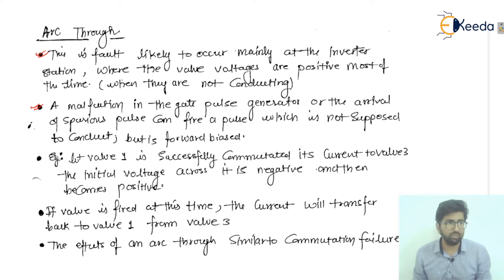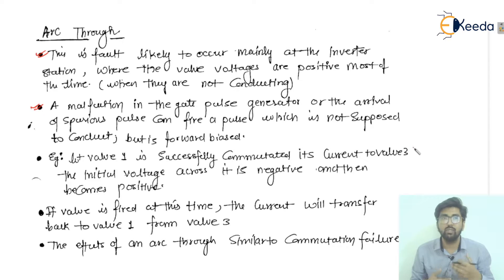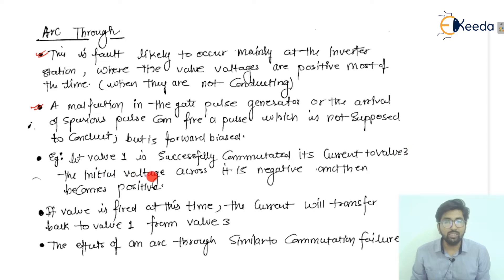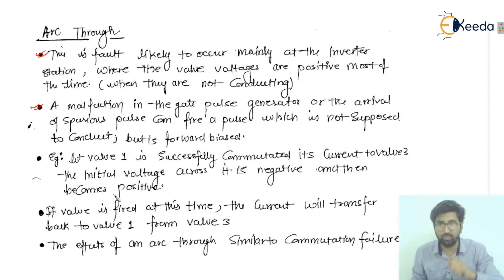Let us consider a six-pulse converter having six valves in the upper and lower commutation portions. Consider valve number one, which has successfully commuted its current to valve number three — so successful commutation occurred from valve 1 to valve 3. The DC current now flows in valve number 3. Initially the voltage across it is negative, and then it becomes positive.